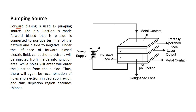Pumping source: forward biasing is used as a pumping source. The PN junction is made forward biased — that is, the P side is connected to the positive terminal of the battery and the N side to the negative. Under the influence of the forward-biased electric field, conduction electrons are injected from the N side into the junction area, while holes enter the junction from the P side. Thus there is recombination of holes and electrons in the depletion region, and the depletion region becomes thinner. This working is the same as a normal semiconductor, except that in a semiconductor laser these are very heavily doped.